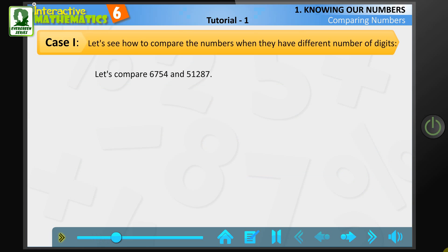First, count the total number of digits in each number to be compared. The number of digits in 6,754 is 4, and the number of digits in 51,287 is 5.